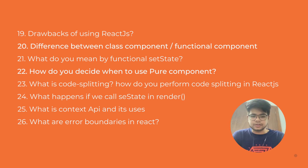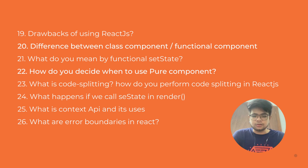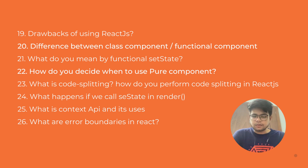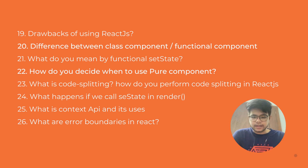What is code splitting? How do you perform code splitting in React JS — you can use React.lazy and React.Suspense. What happens if you call setState in the render method? It will call multiple times and throw an error. What is the Context API and its uses? What are error boundaries in React? These were the questions asked according to my friend.